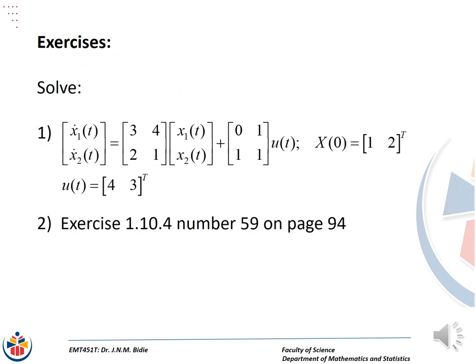As part of exercises, following the steps we have just used, solve those state equations. For number 2, we are using the textbook Advanced Modern Engineering Mathematics, fourth edition, by Glyn James. Go to exercise 1.10.4 and do number 59; you can also do number 60 and number 61, which is on page 94.